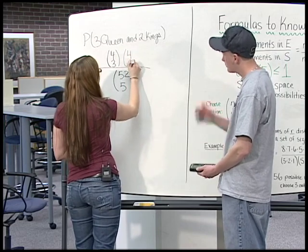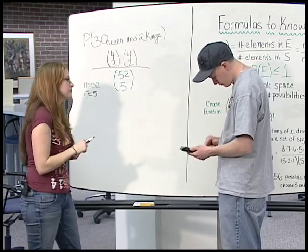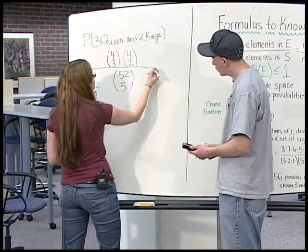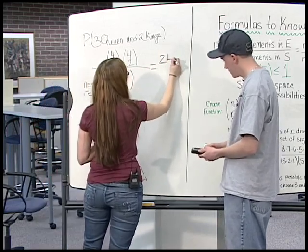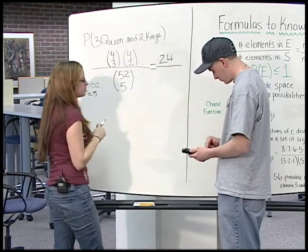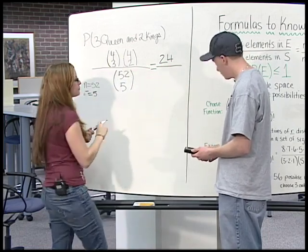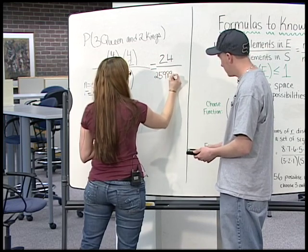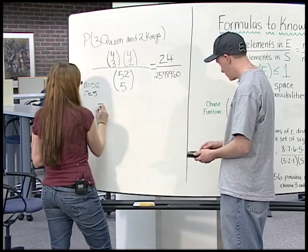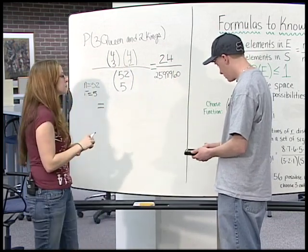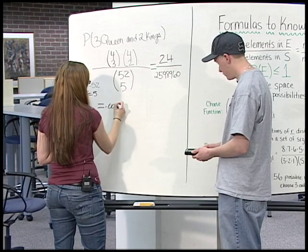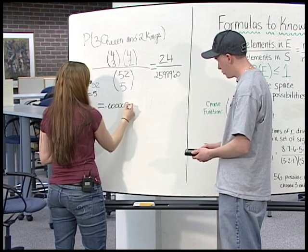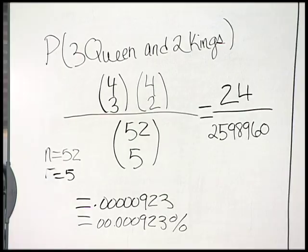Now go ahead and calculate the numerator. 24. And the denominator? 2,598,960. Which equals? 0.00000923. So you have a 0.000923% chance of getting 3 queens and 2 kings.